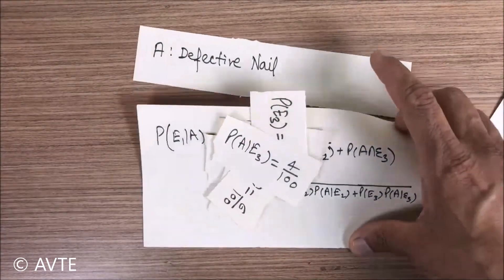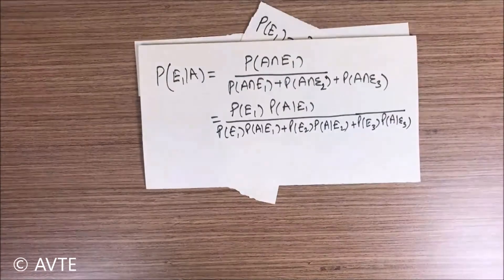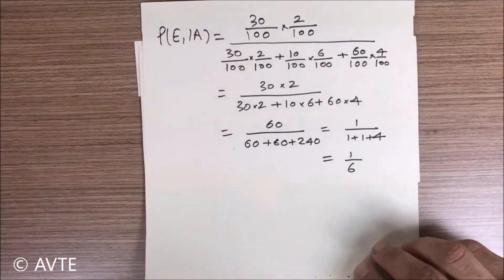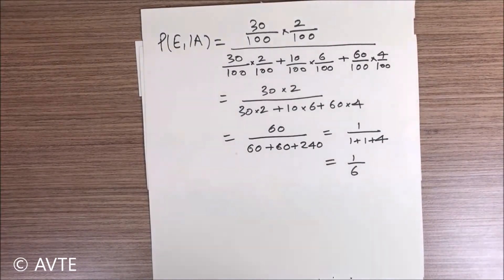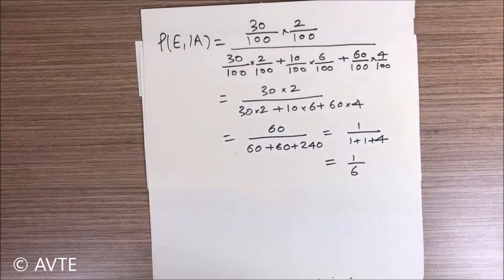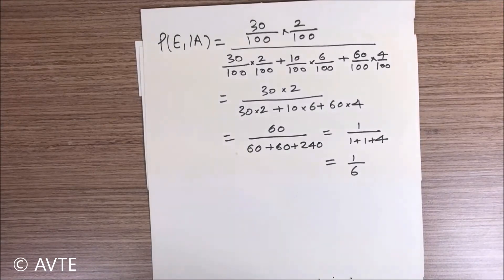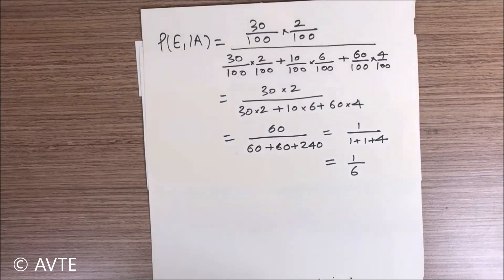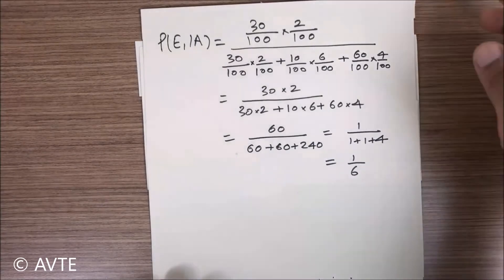Putting all the information into the formula, the calculation becomes: (30/100 × 2/100) divided by (30/100 × 2/100 + 10/100 × 6/100 + 60/100 × 4/100). Working this out, the answer is 1/6. By clearly dividing the question into pure probabilities, exhaustive events, conditional probabilities, and then identifying the target, you can easily get the answer. Thank you very much.